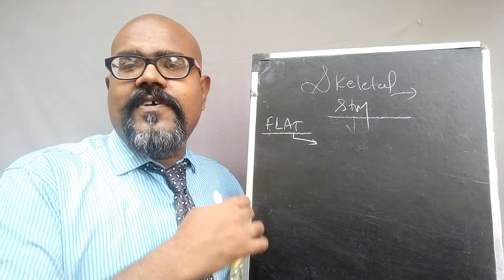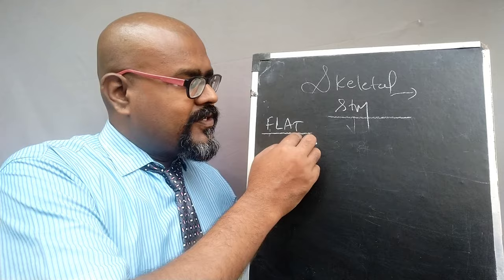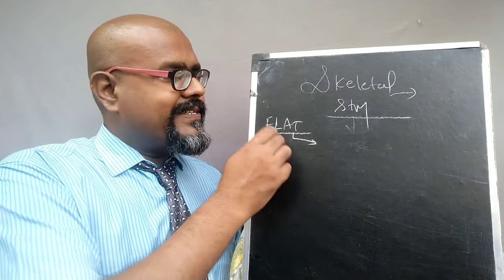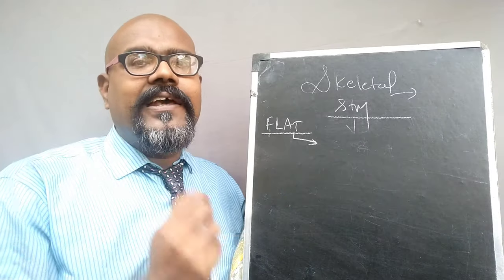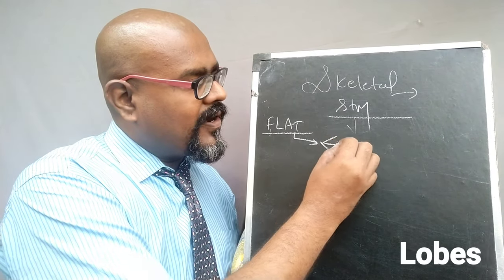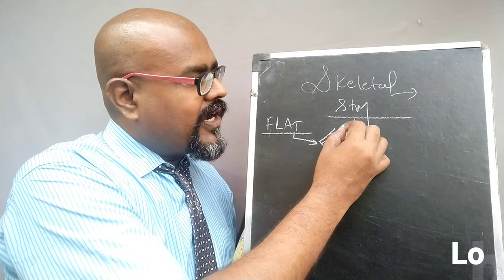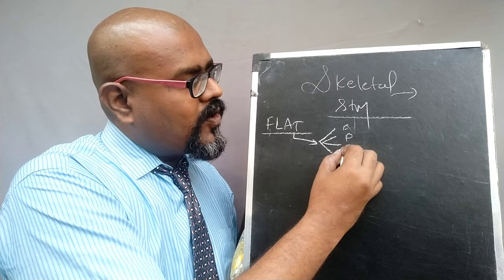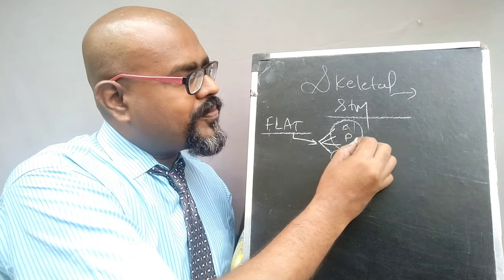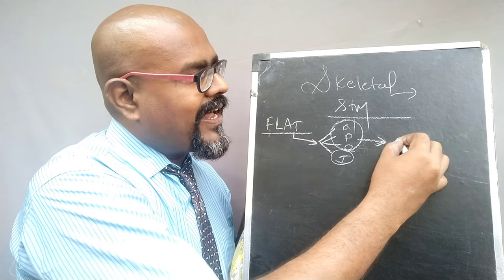The first type is the flat bone. The name itself shows that it looks flat in nature. It is especially present in your cranial region. There are four different lobes in the cranial system — in the skull — that is the frontal lobe, parietal lobe, occipital lobe, and temporal lobe.